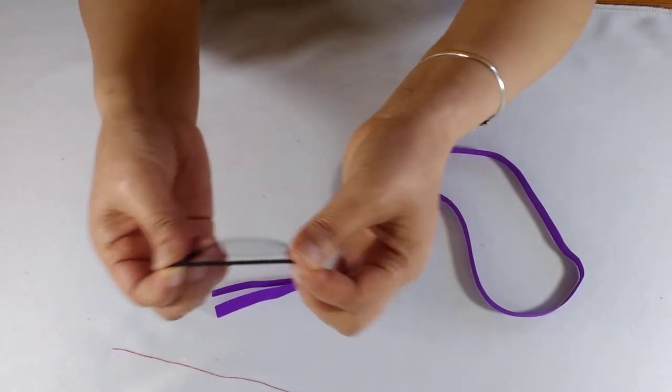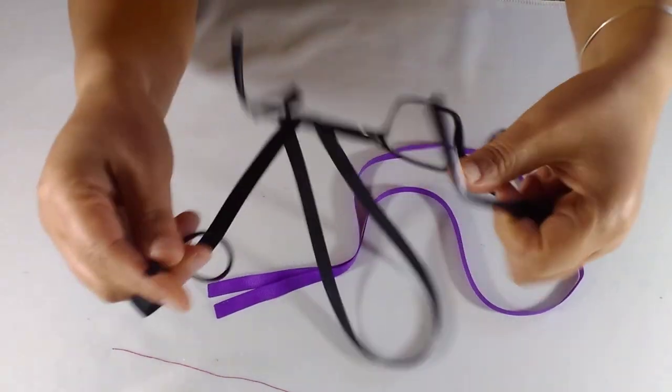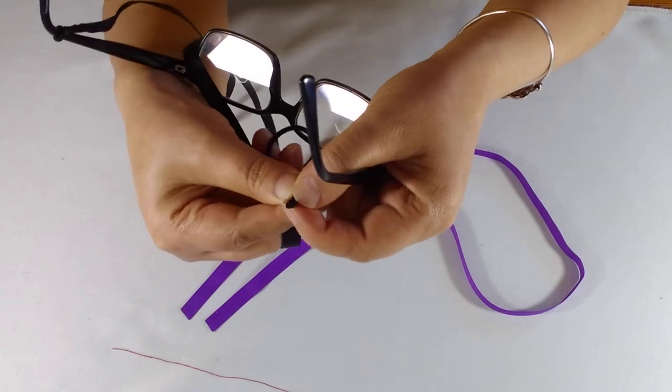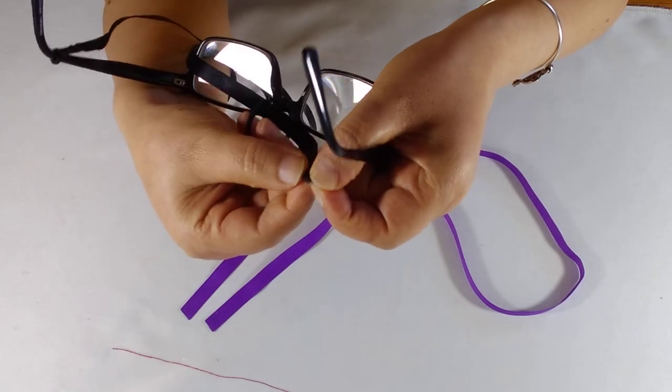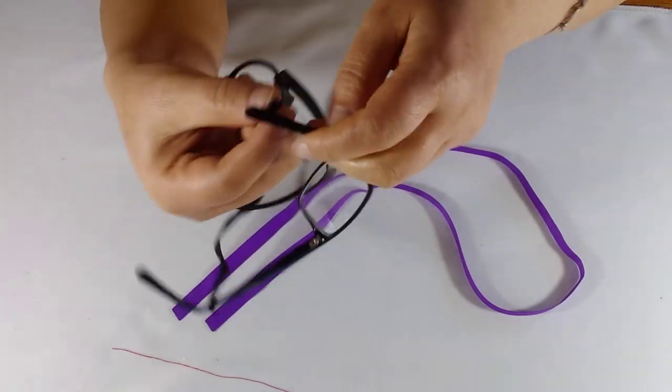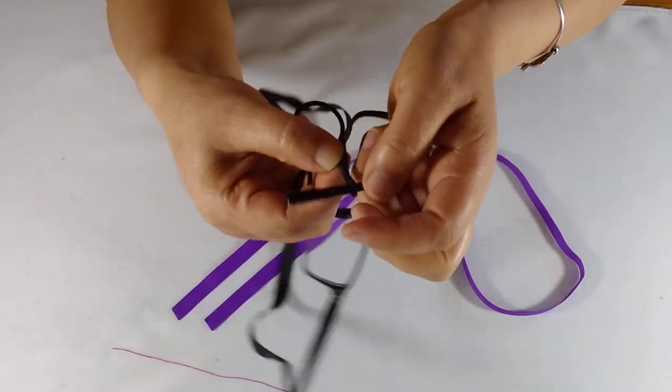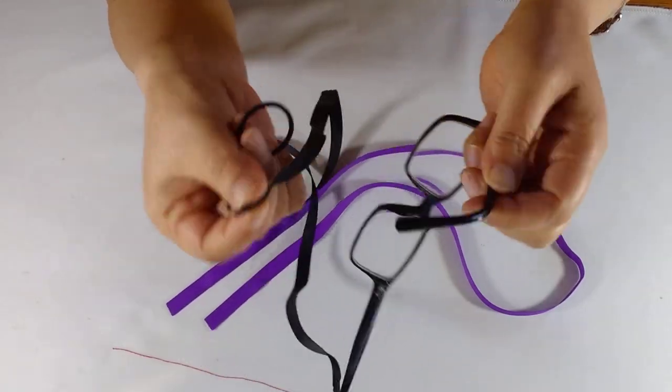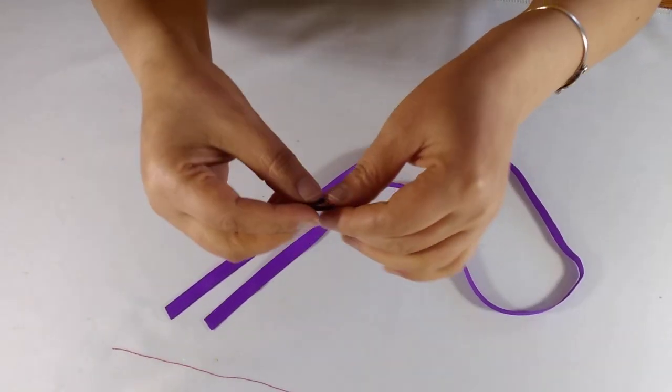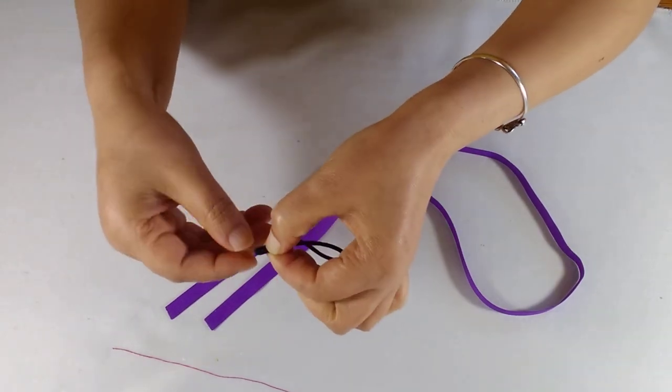You can see the one I made earlier has a loop that's really tiny, about five millimeters. You can make it bigger, but I cut it really small. Remember that.